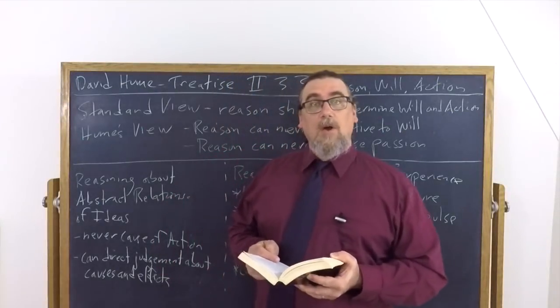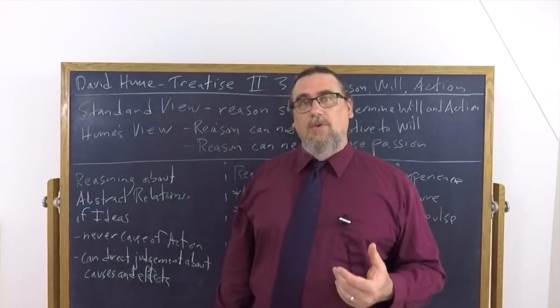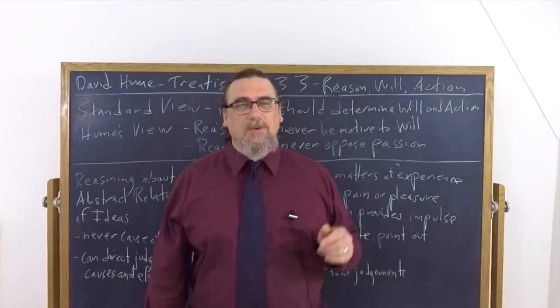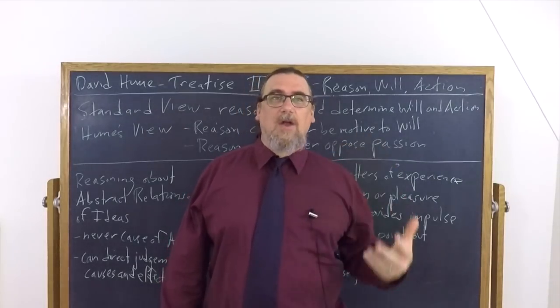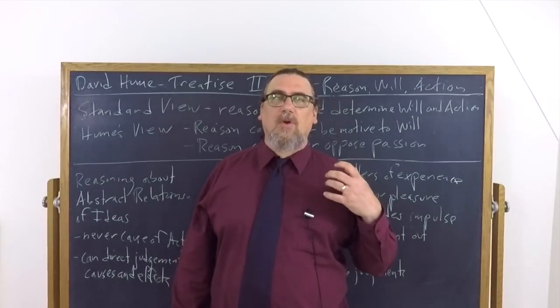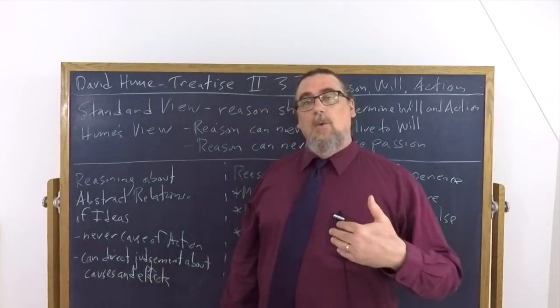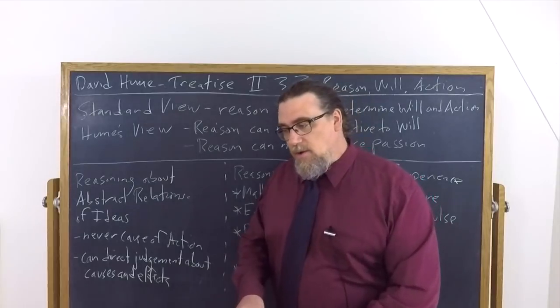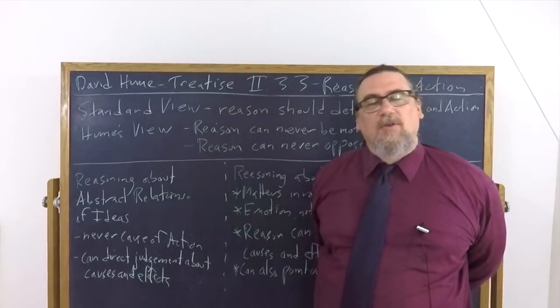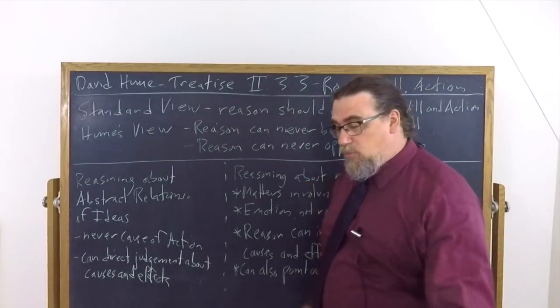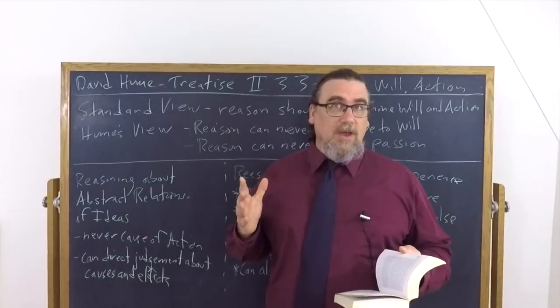In Book 2, Part 3, Section 3 of his Treatise on Human Nature, David Hume is going to present his rather controversial views on the capacity for reason or rational faculty, including the understanding to provide some sort of motivation or direction to the will, which is the faculty of choice, which then leads to action. And David Hume is going to oppose his view to what we might call a standard position or standard view that he takes pretty much everyone prior to him to have espoused in one way or another.